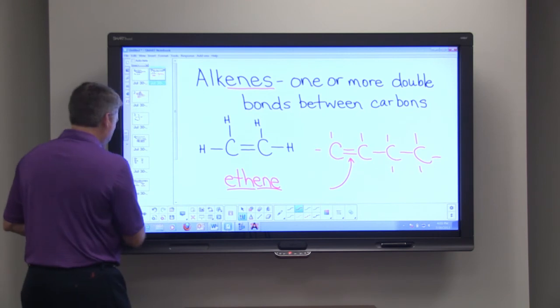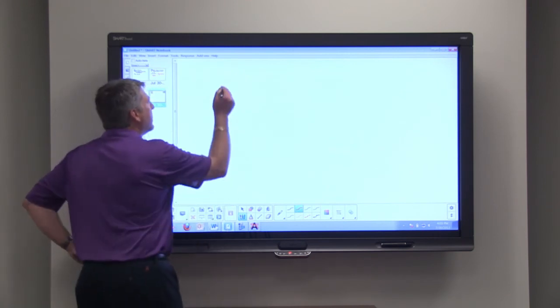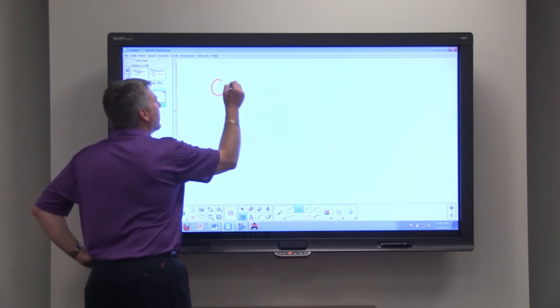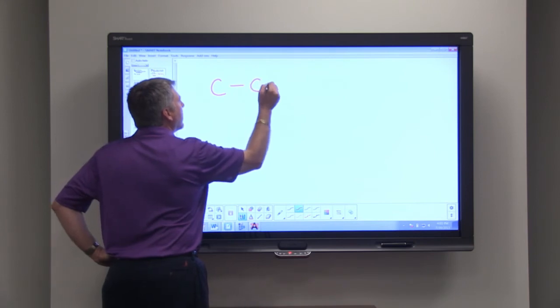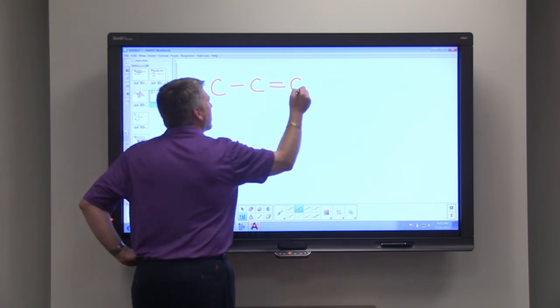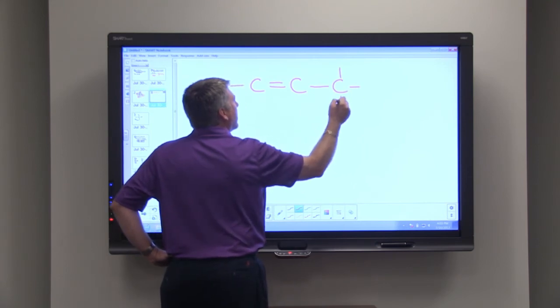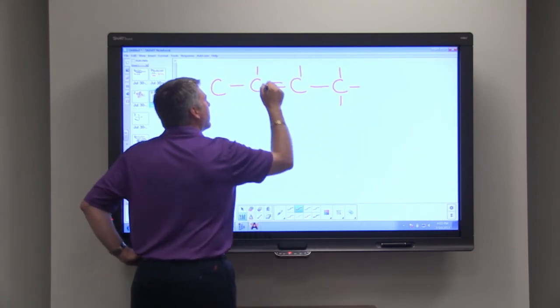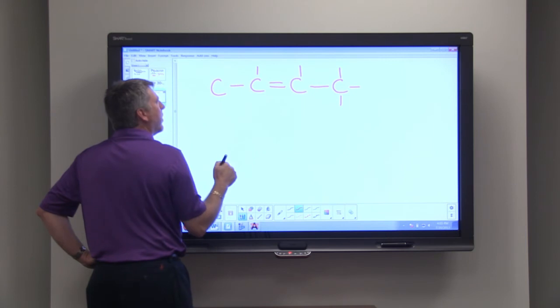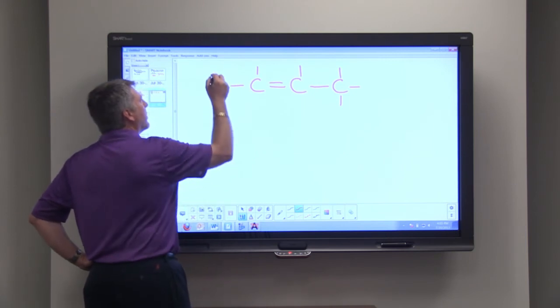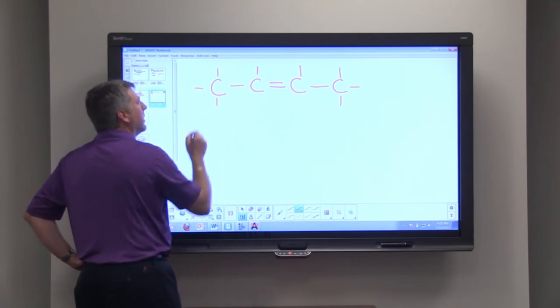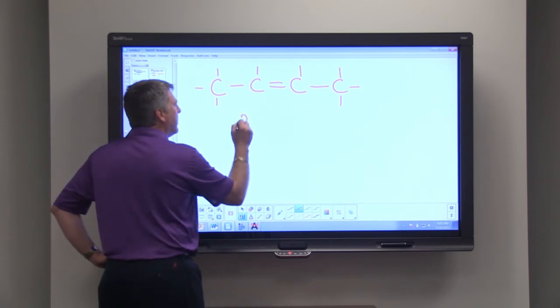And so we can draw 2-butene like this. Make sure that we have all the carbons with four bonds and no more than four bonds. So this is 2-butene.